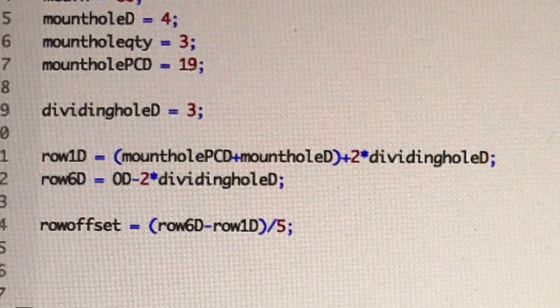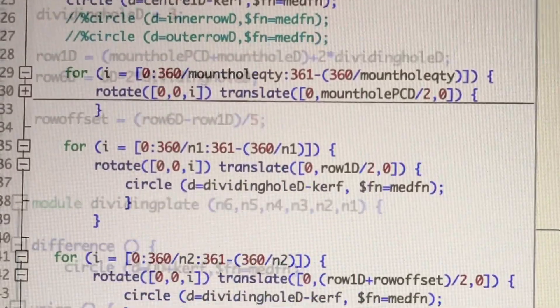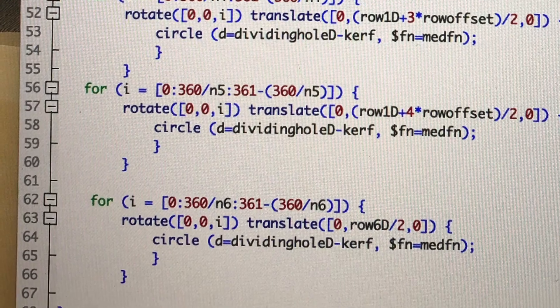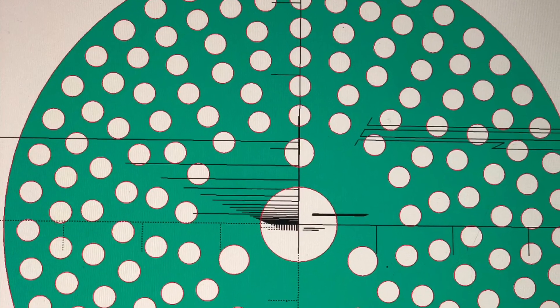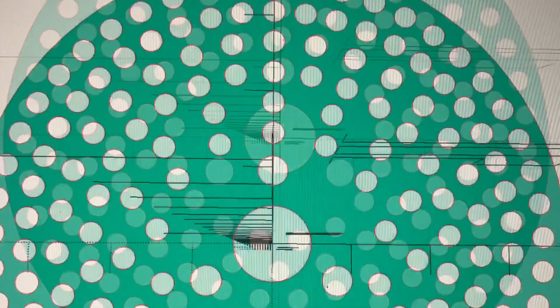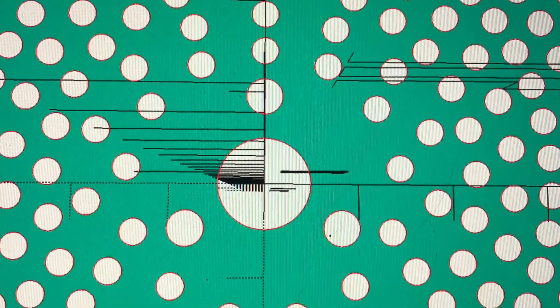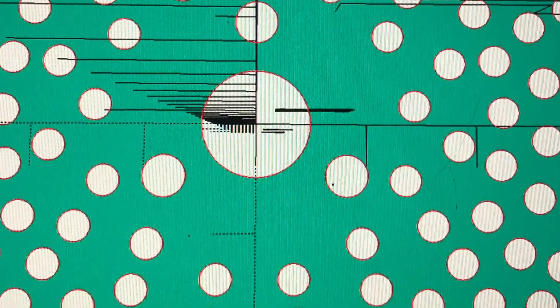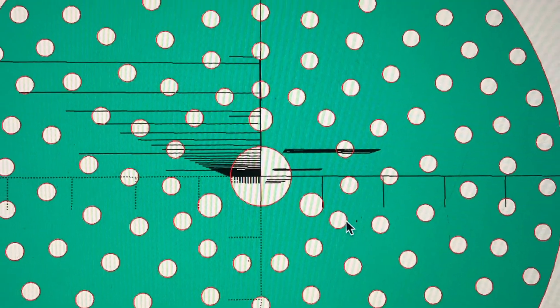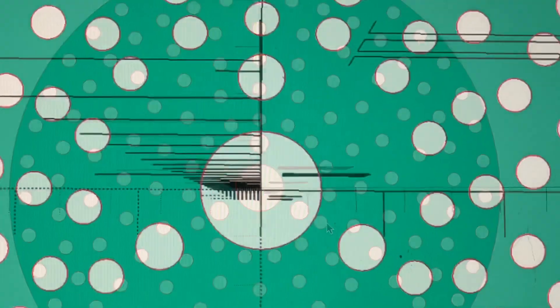I've set it up parametric in a program called OpenSCAD, which means you can set all the parameters such as the number of holes per each of the six rings, diameter of the central hole, diameter of the fixing holes, pitch circle diameters for each of those various places, overall diameter, and also an offset for the laser kerf.